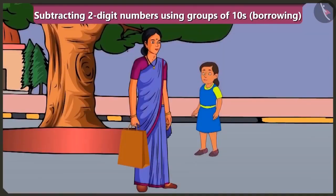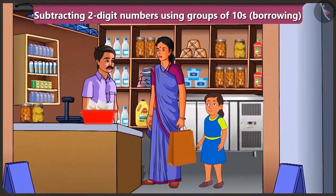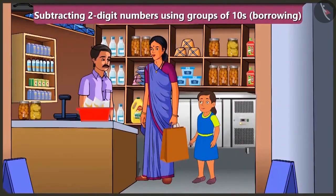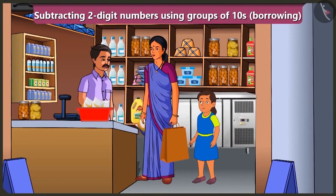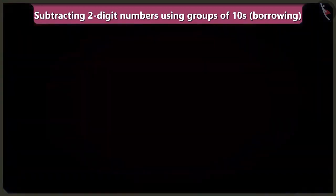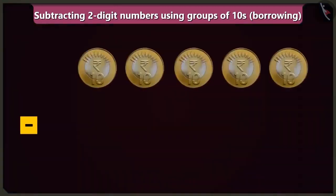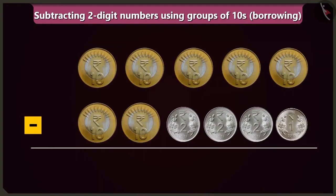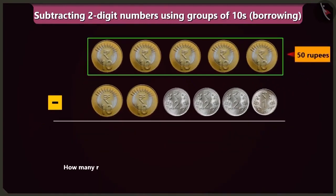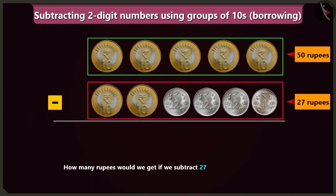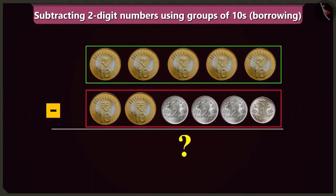You are absolutely right, Bubbly. Come on, let us now go to buy milk. Brother, what is the price of one packet of milk? One packet is 27 rupees. Take this 50 rupees. Mummy, uncle told to give 27 rupees for milk — then why are you giving him 50 rupees? Bubbly, uncle will subtract 27 rupees from 50 rupees and would give the rest of the money back. How many rupees would it be if we subtract 27 rupees from 50 rupees?